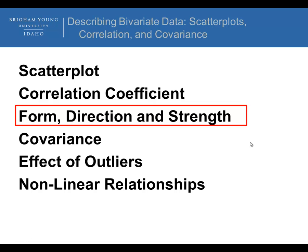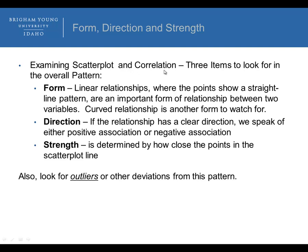The next item is form, direction, and strength of a linear relationship. When examining a scatter plot and correlation R, there are three items to look for in an overall pattern. First, the form: is it a linear relationship? Do the points show a straight-line pattern or close to a straight-line pattern? A curved relationship is another form to watch for, but for this course we're mainly looking for linear relationships. The direction: if the relationship has a clear direction, we speak of either positive or negative association. The strength is determined by how close the points are to the scatter plot line. Also look for outliers and other deviations from the pattern.